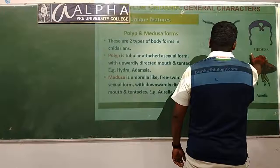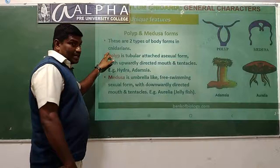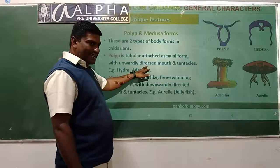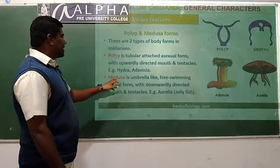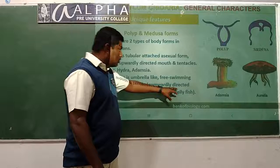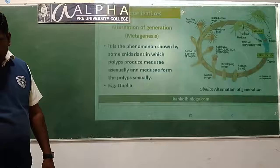Polyp and medusa: this is the polyp and this is the medusa. Polyp is the asexually reproducing structure; medusa is the sexually reproducing structure. There are two types of body forms in Cnidaria. Polyp is a tubular, attached, asexual form with upward directed mouth and tentacles - example Hydra. Medusa is an umbrella-like, free-swimming sexual form with downward directed mouth and tentacles - example jellyfish or Aurelia.